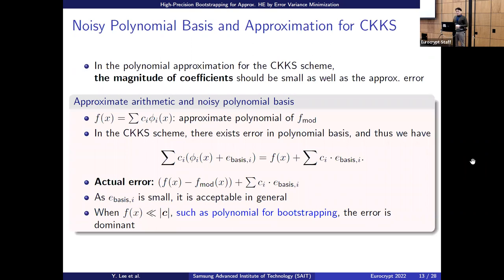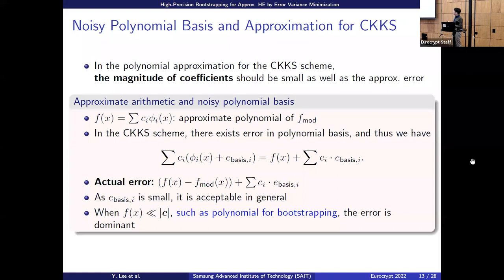Especially in bootstrapping, the final error is not just approximation error — we have to do slot-to-coeff, which is a linear combination of independent errors. We need a measure of error that considers slot-to-coeff, not only the approximation step. Say f(x) is an approximation of f_mod. In CKKS, performing f(x) does not actually give f(x) exactly because we have e_basis — error included in the polynomial basis. The actual error is the approximation error plus the amplified basis error.